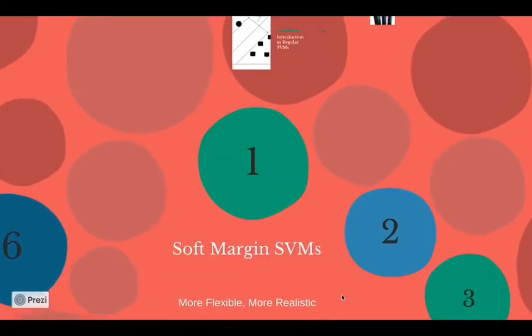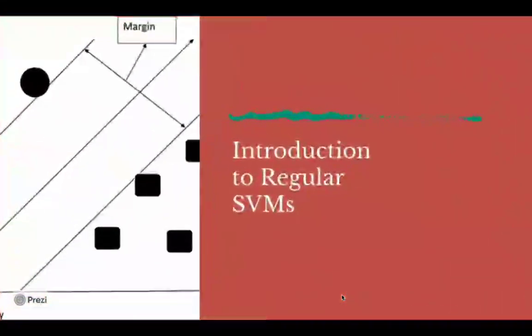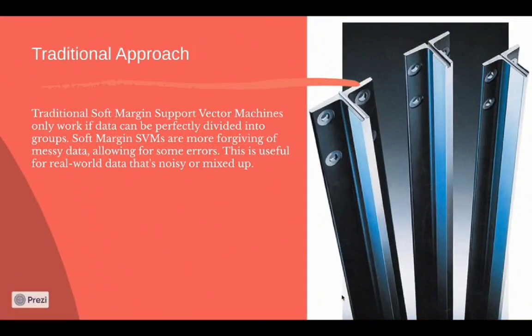Soft Margin Support Vector Machines are more realistic and more flexible. Traditional SVMs only work if data can be perfectly divided into groups, but Soft Margin SVMs are more forgiving of messy data and are useful for real-world data that's noisy or mixed up.